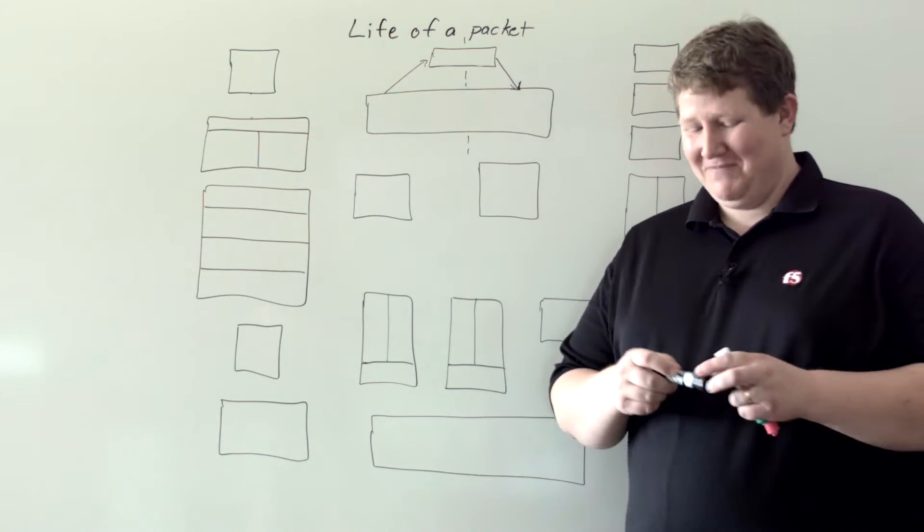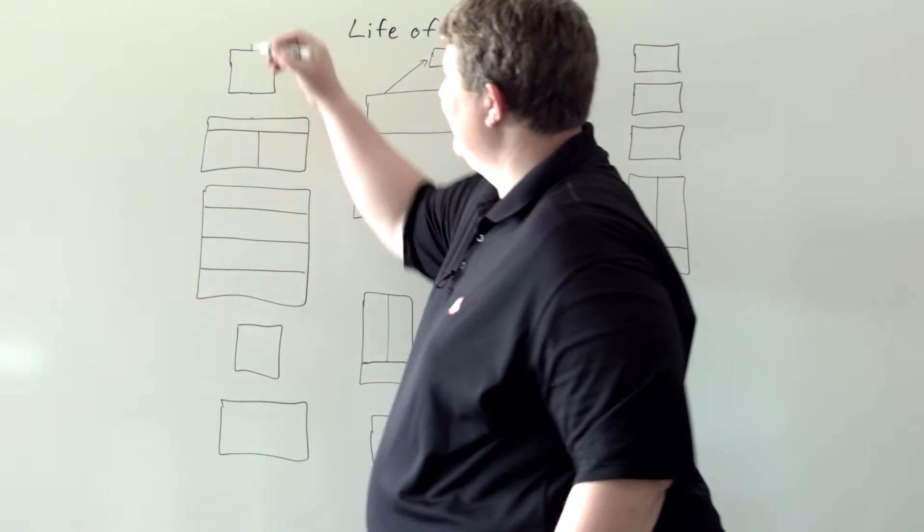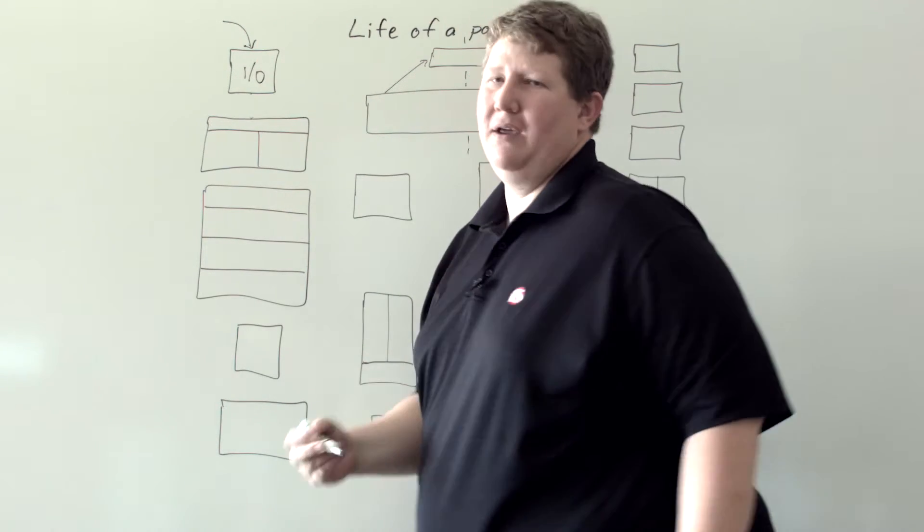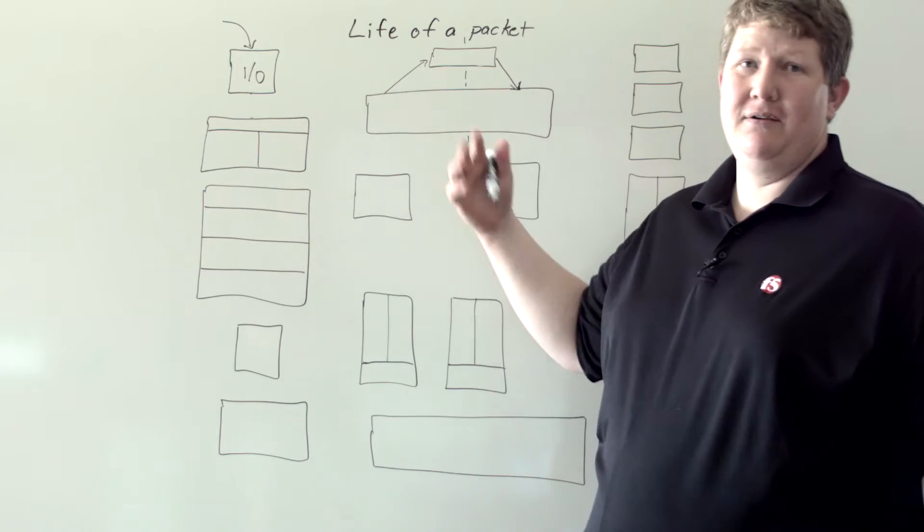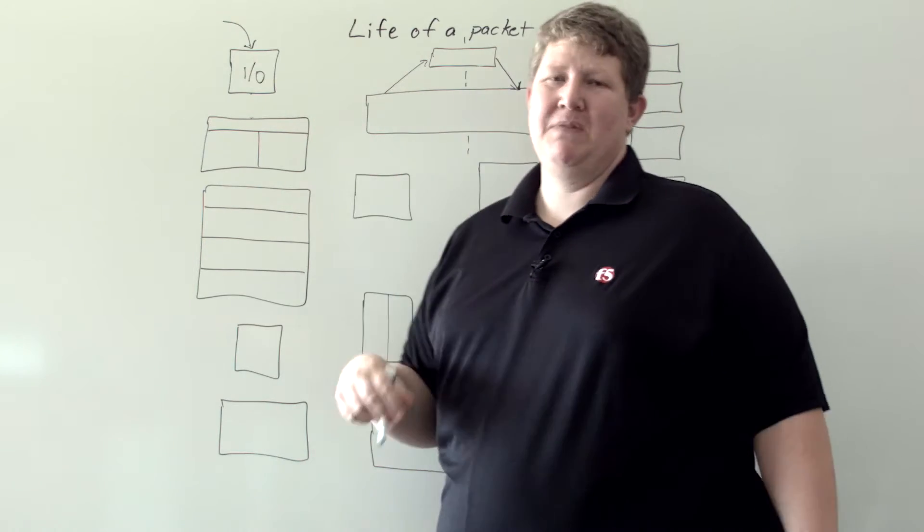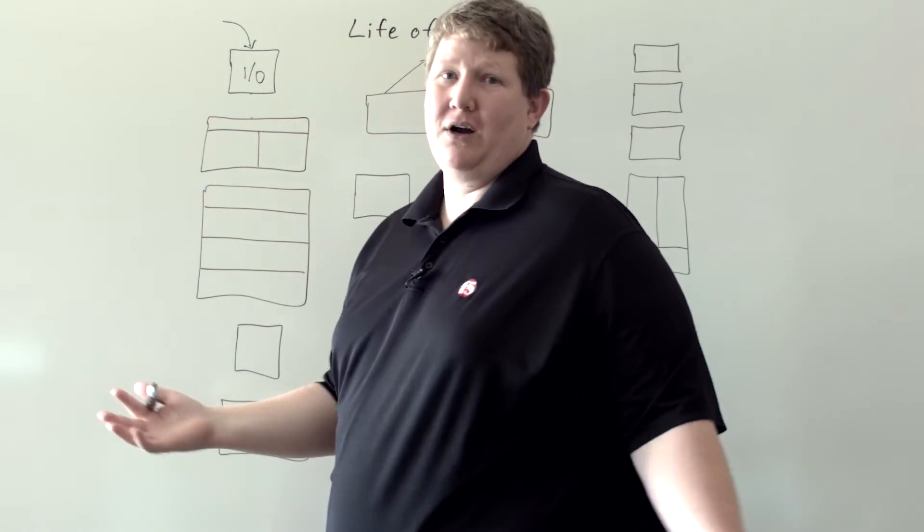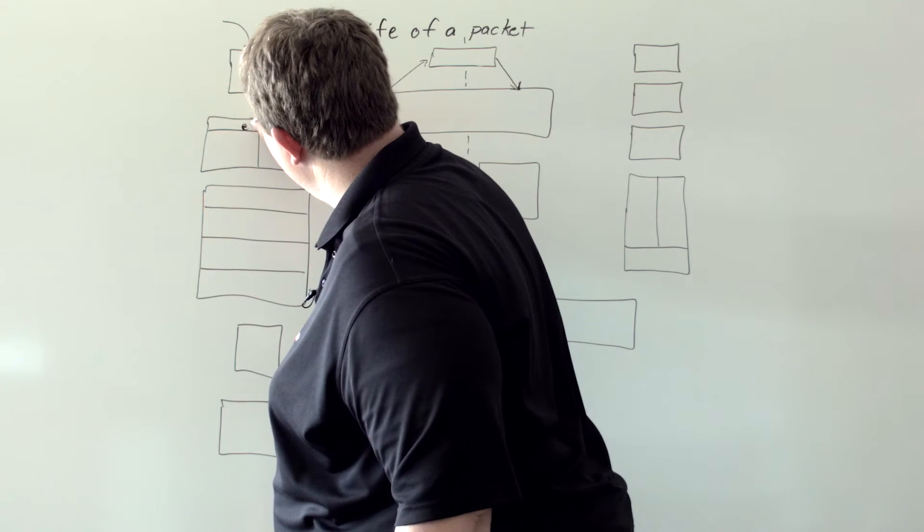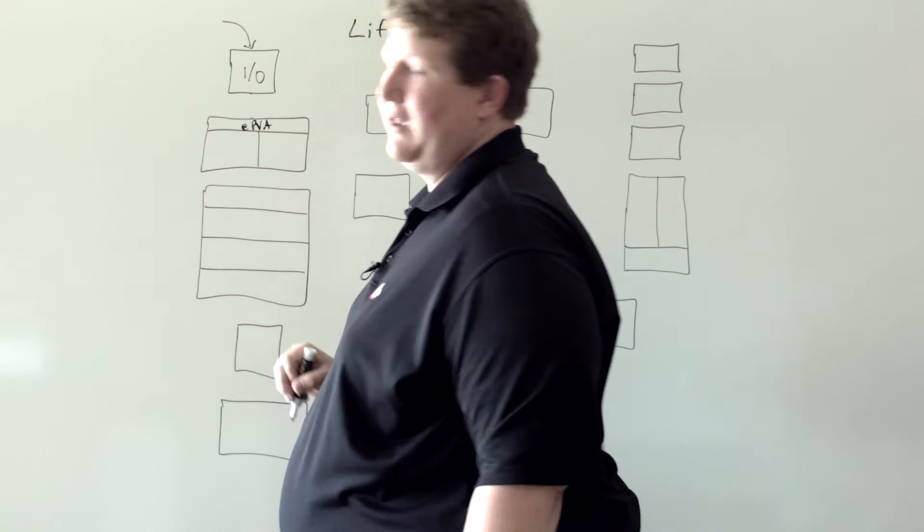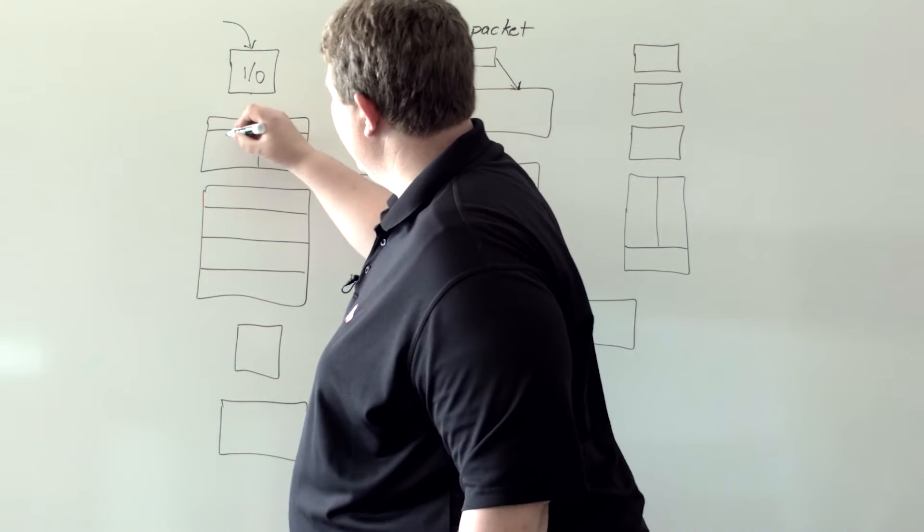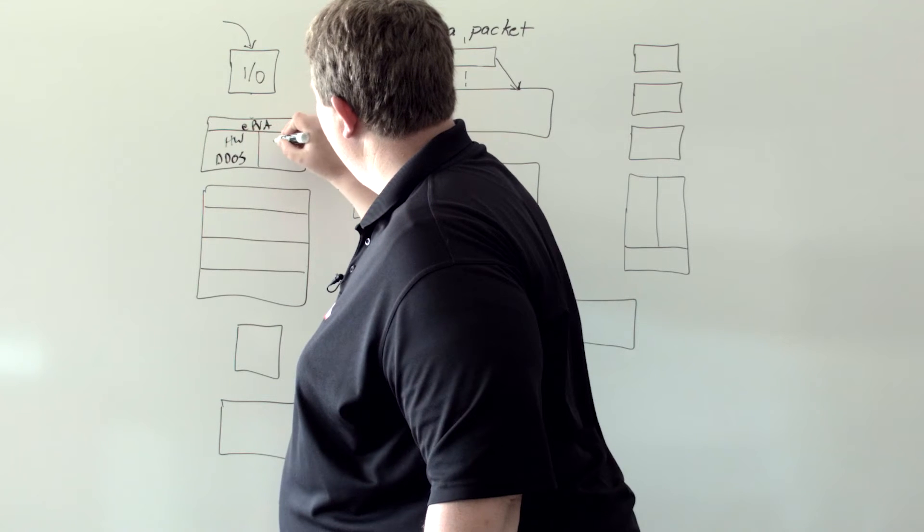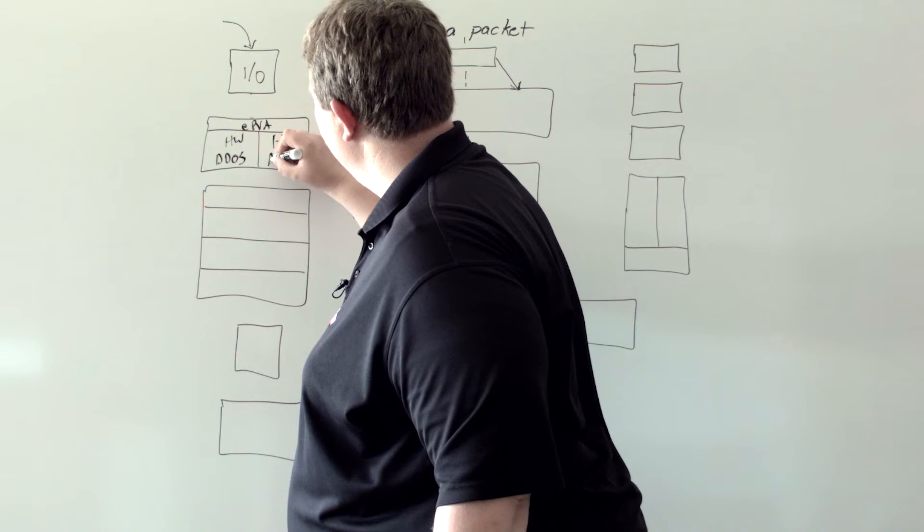So we start when the packet comes into the box here. We're going to deal with the input-output. We're coming into the box, and the first thing we're going to hit, if this is a hardware box, is the EPVA or the packet velocity ASIC. Here's where your hardware DDoS and your hardware acceleration is going to be.